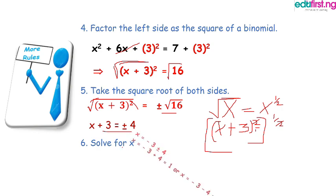So what we need to do is to solve for x. So x becomes -3 ± 4. Remember, we are having ±4 here because it is a quadratic equation. Quadratic means we are going to have two answers.